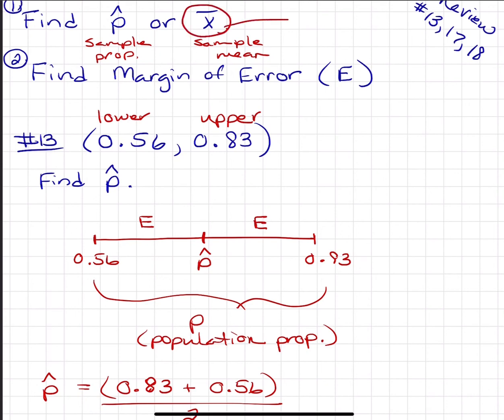The mean would be in the middle; the sample mean would be in the middle between your upper and your lower bound. Sorry, I should have the lower bound over here and upper bound over here.